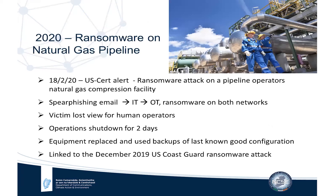A ransomware attack on a natural gas compression facility was reported by US-CERT on 18 February 2020. The attack entered via a spear-phishing email onto the IT network and spread to the OT network. Ransomware on both networks caused operators to lose visibility of the process. The plant was still operating safely, but since operators couldn't see what was happening, they had to shut down for safety reasons. Equipment had to be replaced and last-known-good configuration backups were used. The incident is also linked to an attack on the US Coast Guard the previous December.